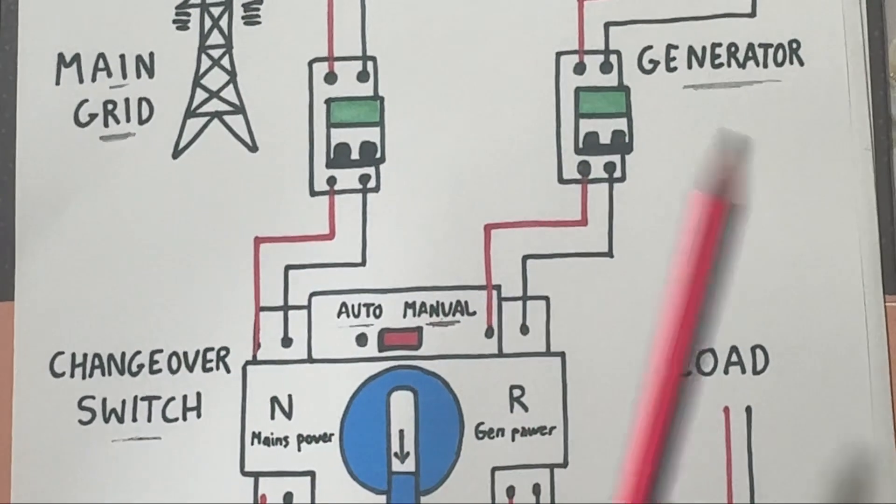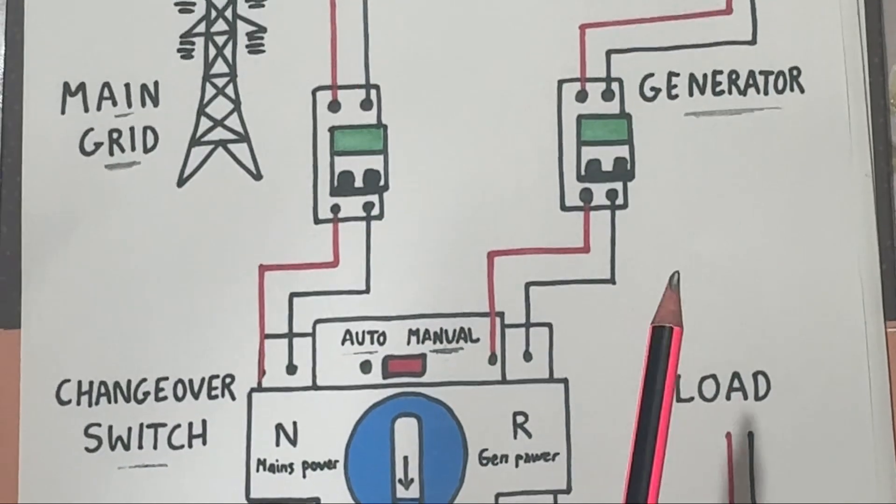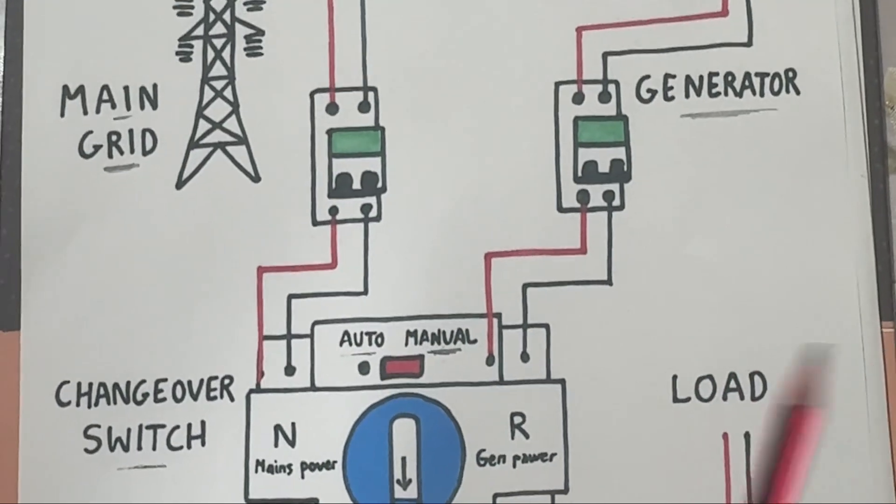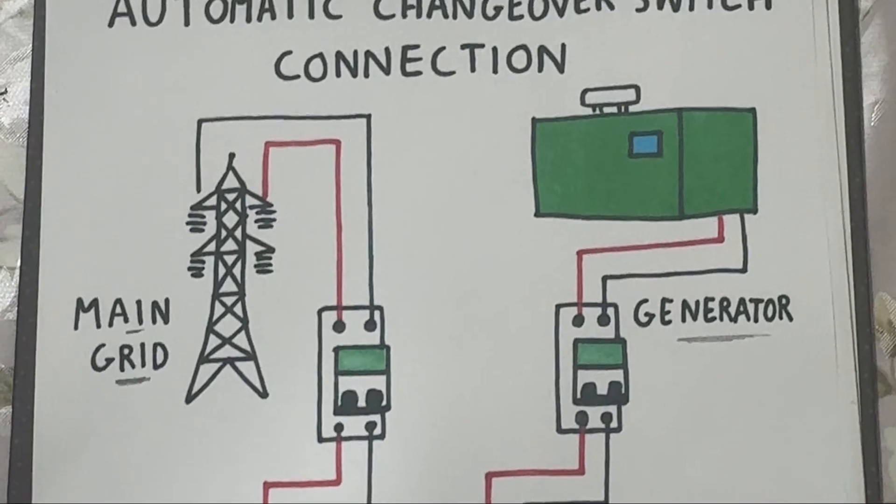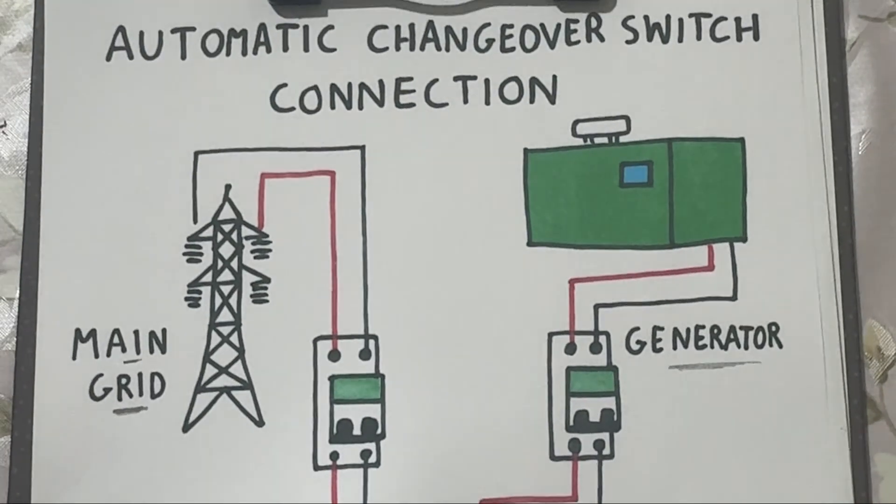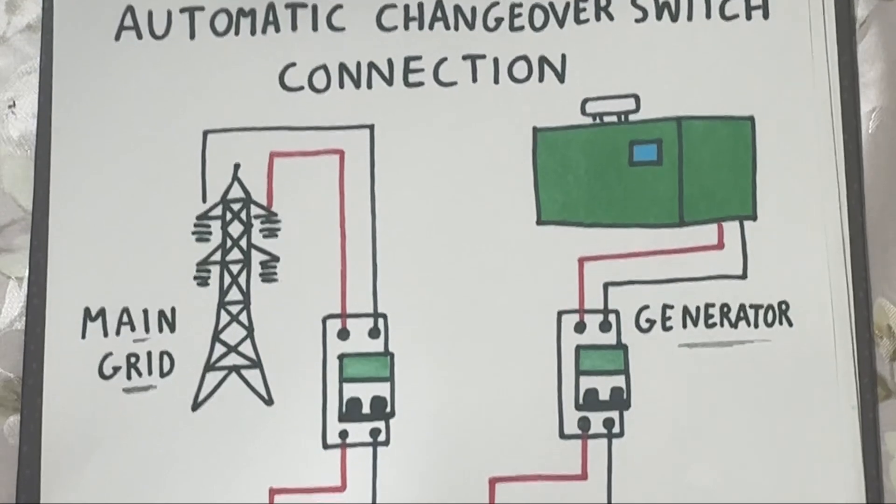And that's how an automatic changeover switch works. It's a simple yet powerful system that keeps your lights on, whether it's from the main grid or your generator.